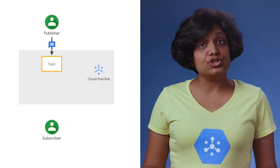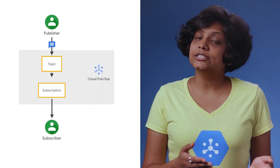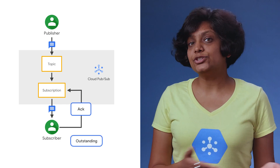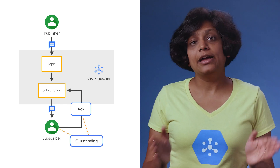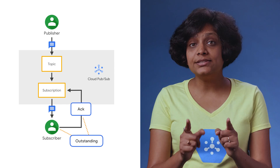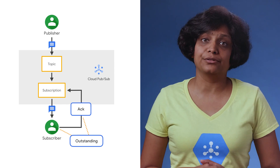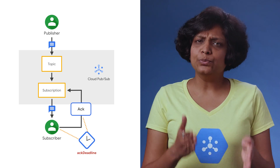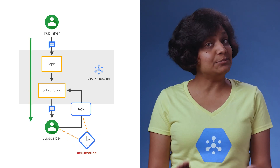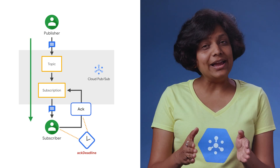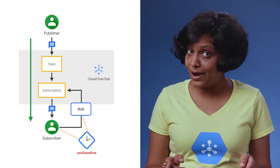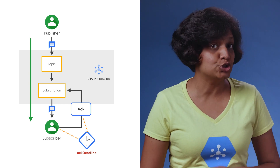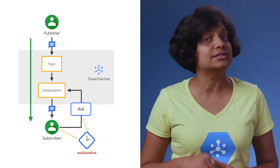Once a message is sent to a subscriber, the subscriber should acknowledge the message. But until it does, the message is considered outstanding. It stays outstanding until the subscriber reaches the configurable limited amount of time called the ACK deadline, at which point Cloud PubSub will attempt to re-deliver it. While a message is outstanding to a subscriber, Cloud PubSub tries not to deliver it to any other subscriber on the same subscription.